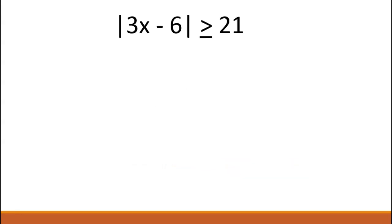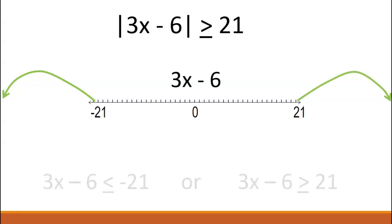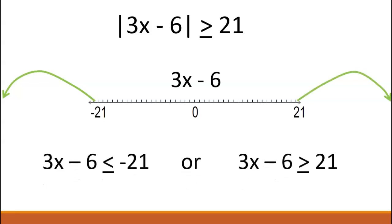In class you discovered that if an absolute value is greater than a value, then its distance from zero has to be more than that value. This makes our solution set go out from the two values. This is an 'or' statement.